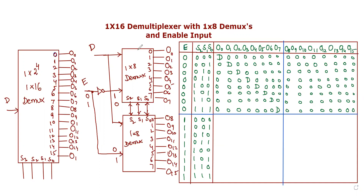Now I will explain this operation using the truth table. The main controlling input is E. The first demux activates when E equals 0. Then the first 1 by 8 demux is active with selection inputs S0, S1, S2 cycling through combinations 0,0,0 through 1,1,1.